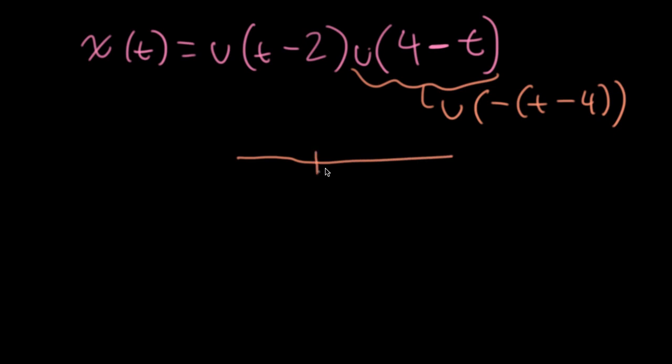So let's rewrite this as u of minus t minus four. So now let's plot out what these functions look like. So if I've got my axis here. So here I've got a unit step function that starts here. Let's see if I can do this.